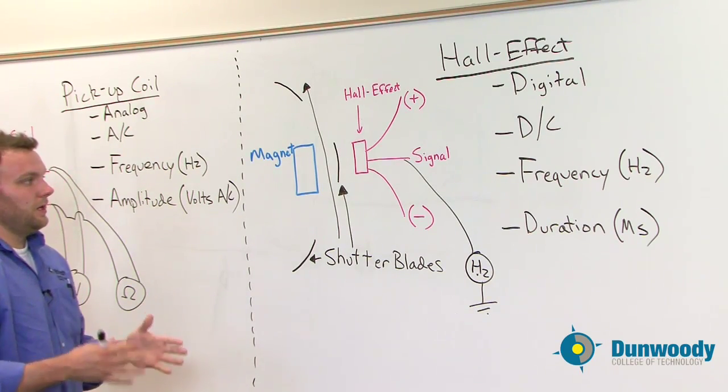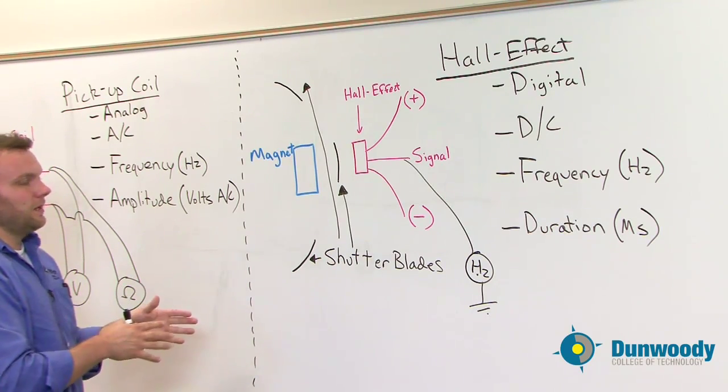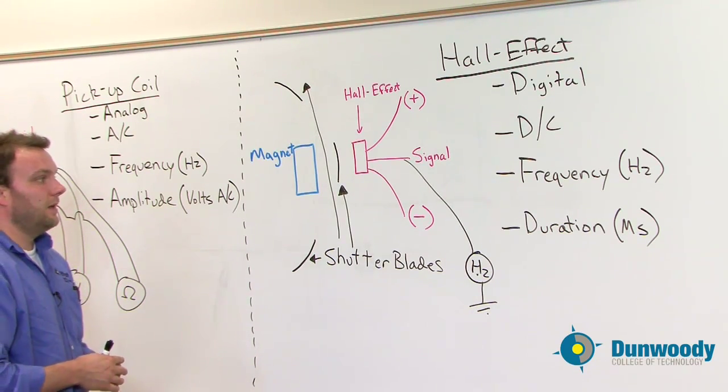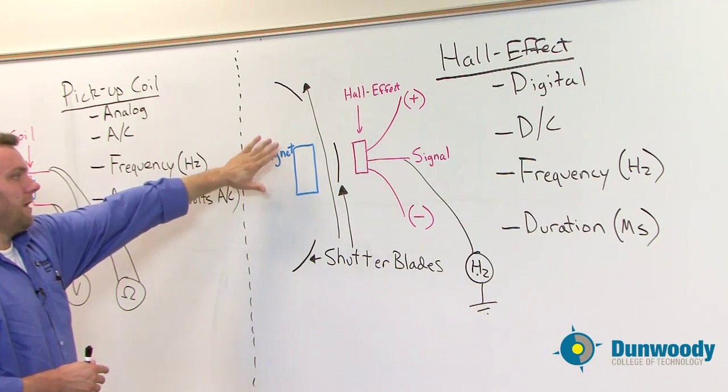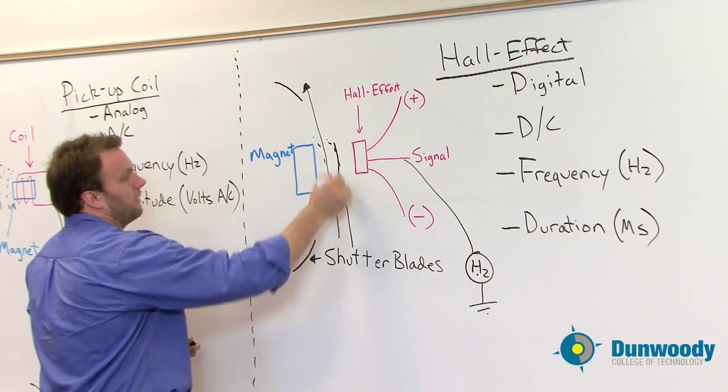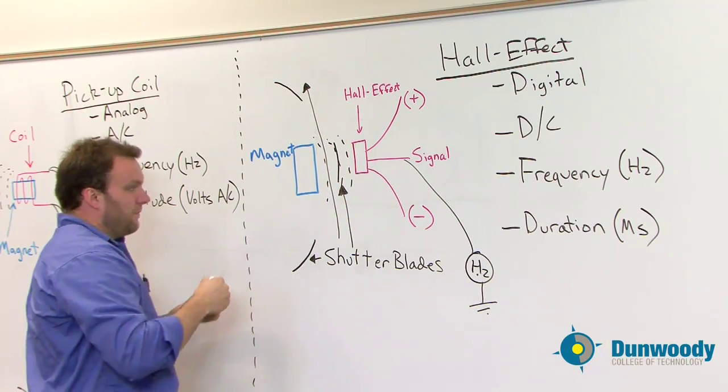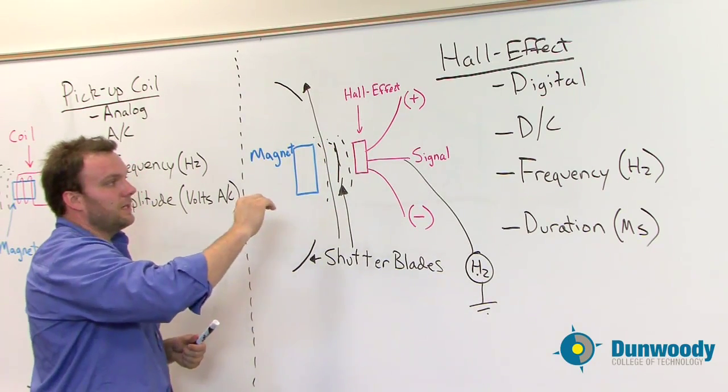The Hall effect sensor is a pretty complex thing from the outside looking in, but once we talk about it, it becomes very simple on how to test it and how it works. The Hall effect sensor is basically a magnet that creates a magnetic field. As that magnetic field crosses the Hall effect switch, it creates a signal voltage.